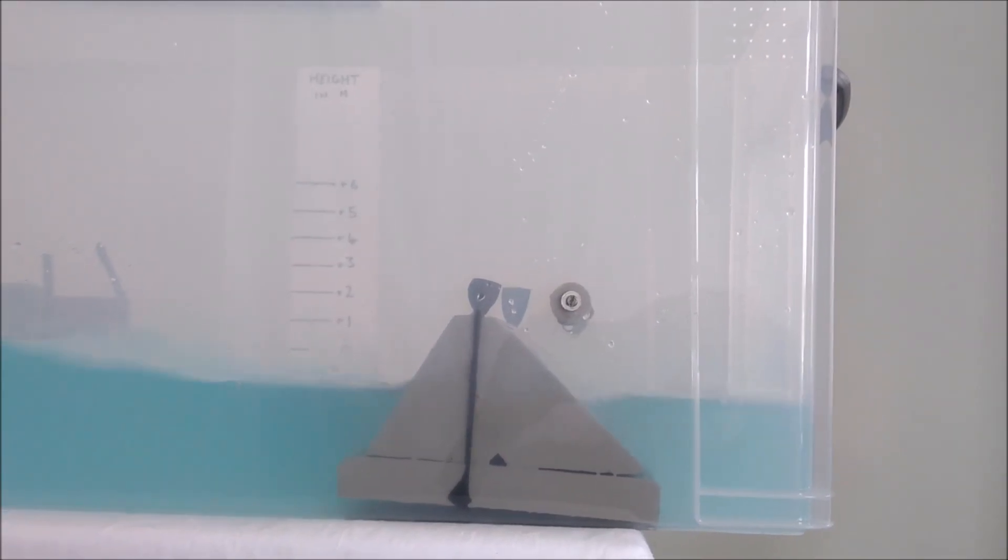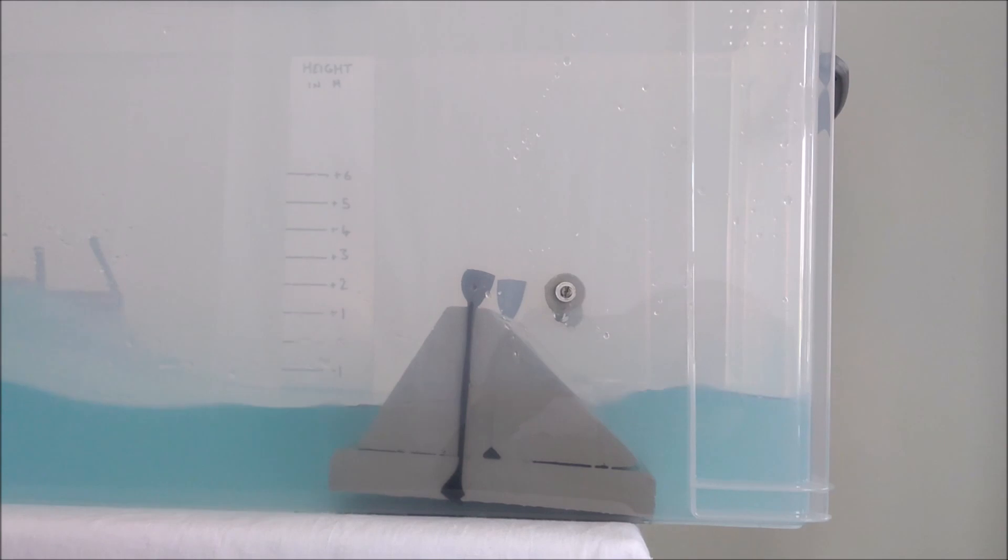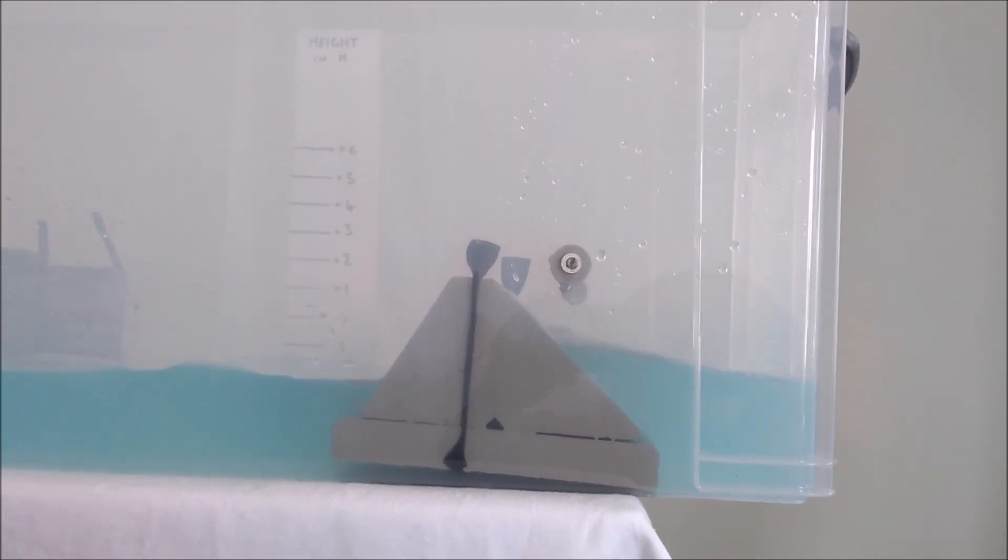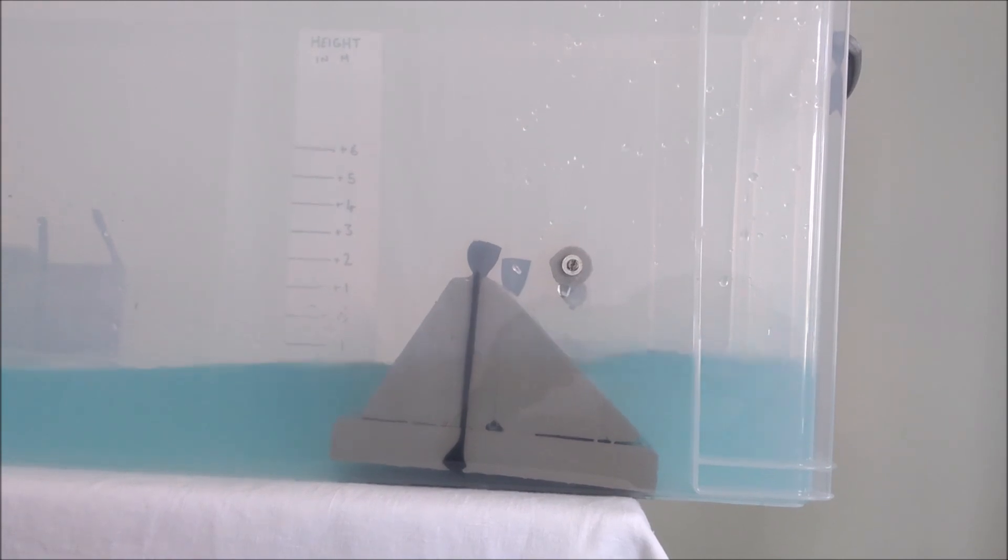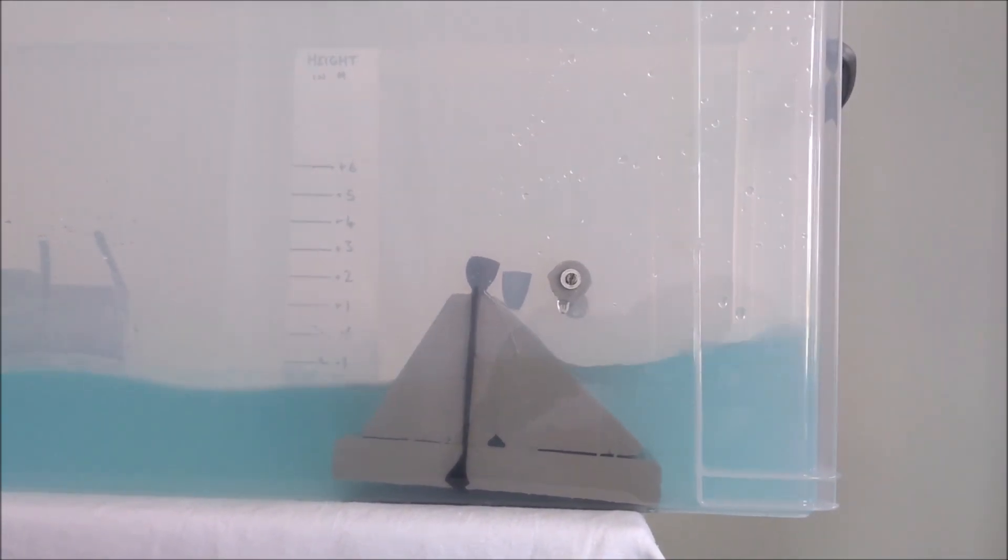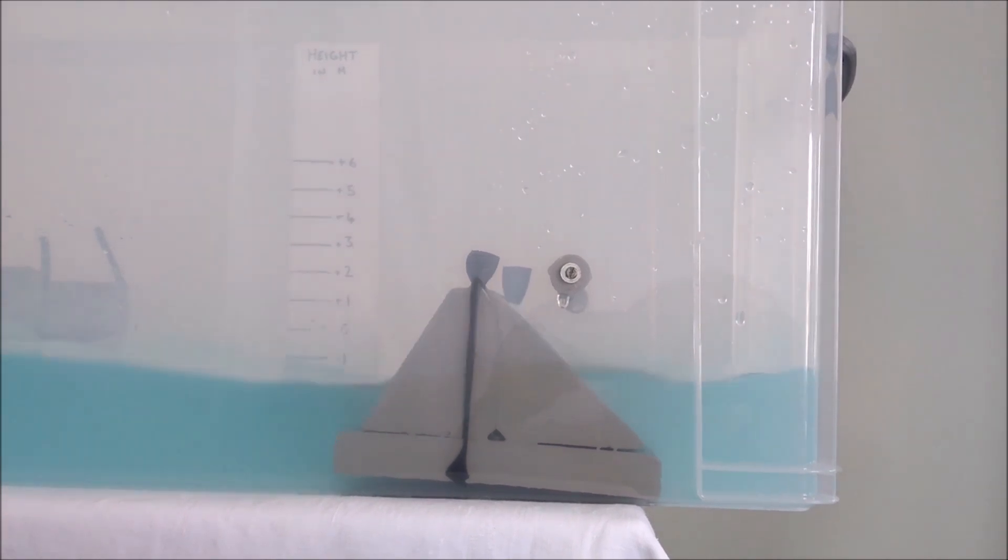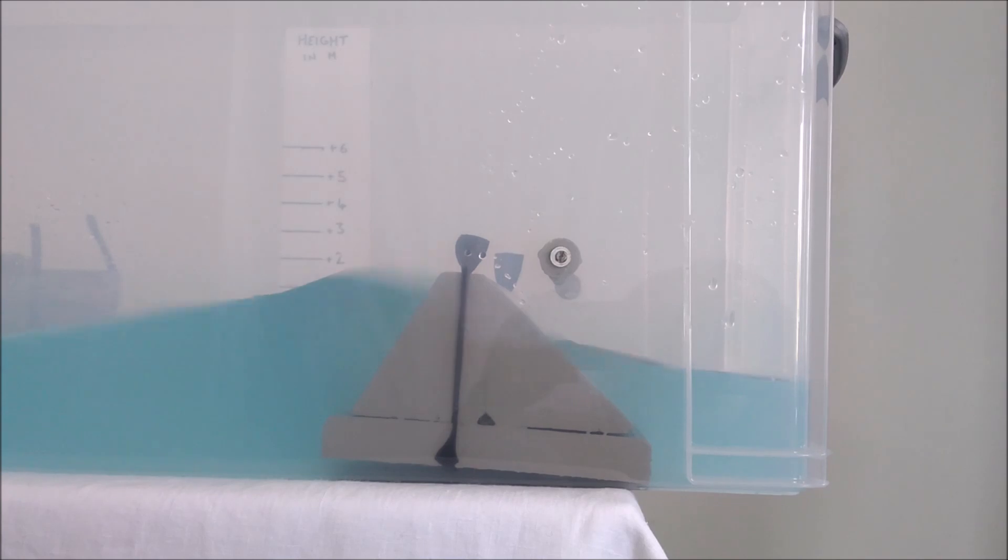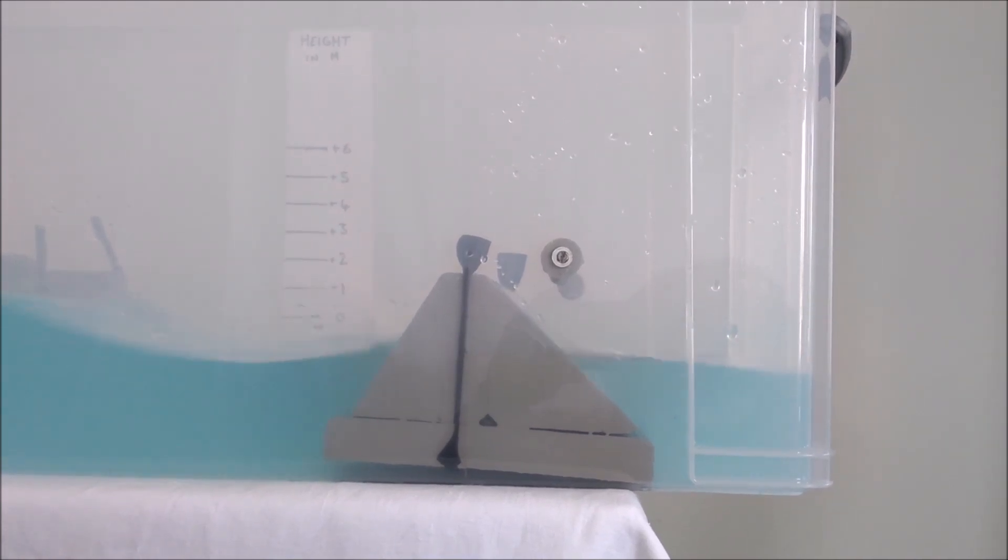I've now added some more water to the tank to simulate a higher tide or perhaps some sea level rise. So you can see with exactly the same types of waves, the same height of waves, because the sea level against the front of the defense is higher, you can see it's overtopping more and more significantly and more frequently. So you can do lots of experiments like this with the wave tank to show how sea level rise might impact on our defenses.